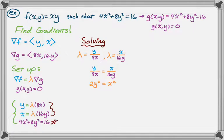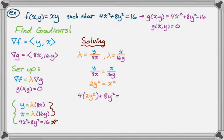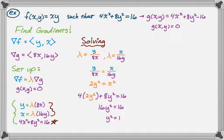This gives a relationship between x and y to use with the third equation. Substituting x² = 2y² into 4x² + 8y² = 16: 4·(2y²) + 8y² = 16, so 8y² + 8y² = 16y² = 16, giving y² = 1, so y = ±1.